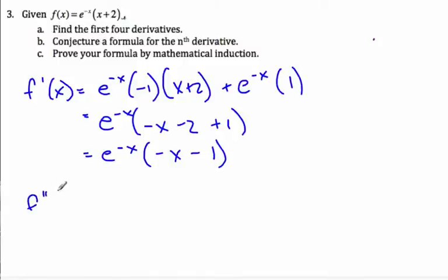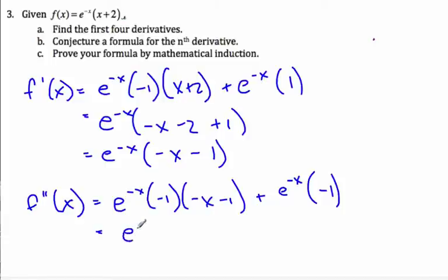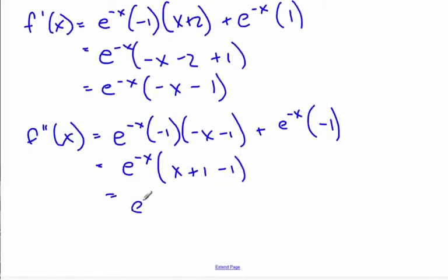For the second derivative, I take the derivative of the first function times negative one, multiplied by the second function, plus the first function multiplied by the derivative of the second function, which is negative one. Factoring out e to the minus x, I get x plus 1 minus 1, which simplifies to e to the minus x times x.